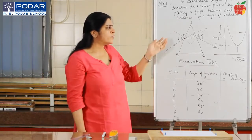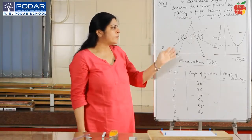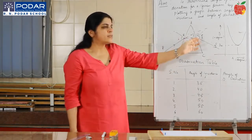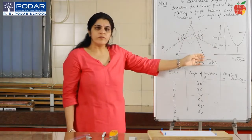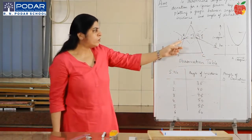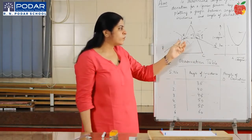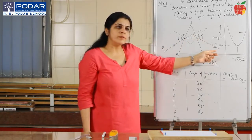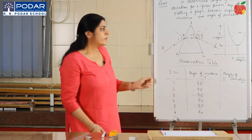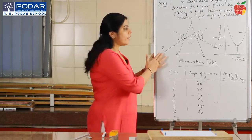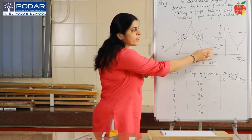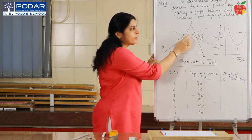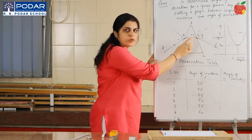As we can see in the figure, ABC is a prism. AB and AC are the two refracting surfaces. PQ is the incident ray and RS is the emergent ray. The angle formed by the extended incident ray and the extended emergent ray is called the angle of deviation.